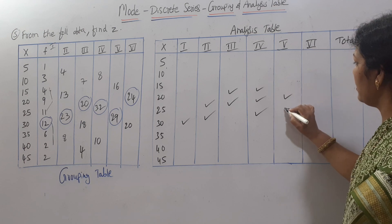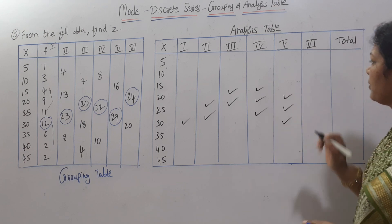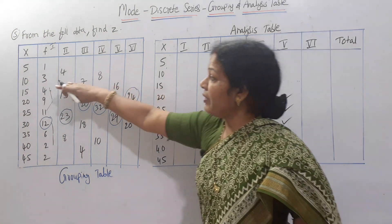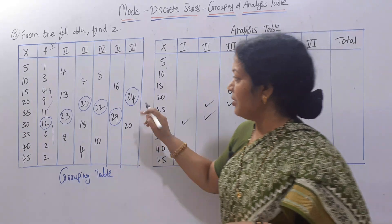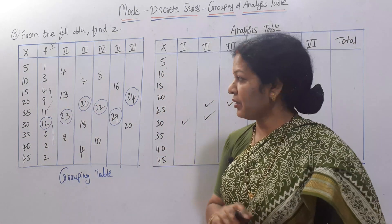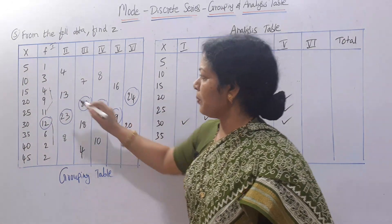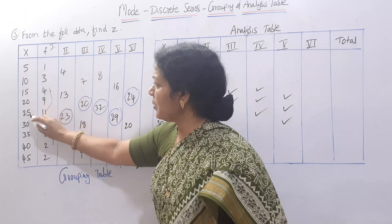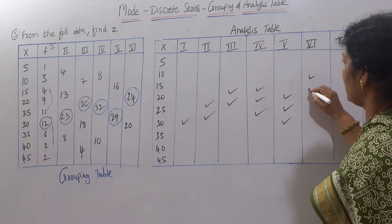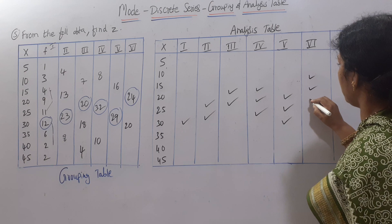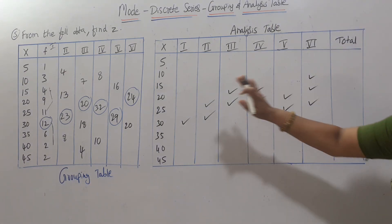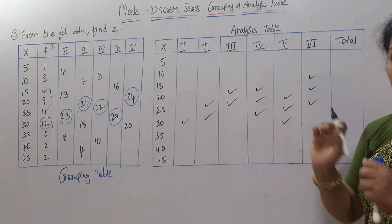In column 6, we left the first two numbers and added three-by-three: 4 plus 9 plus 11 gives 24. That came from X values 15, 20, and 25. So we put tick marks at 15, 20, and 25 in column 6.